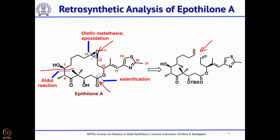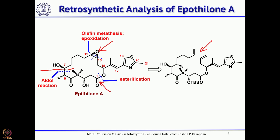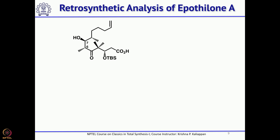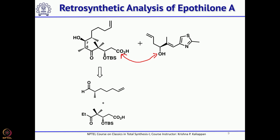The first disconnection, as mentioned, is ring-closing metathesis. This intermediate can be obtained from the corresponding carboxylic acid and alcohol through esterification — meaning these are the two precursors: a carboxylic acid coupled with an alcohol gives the ester. This carboxylic acid can in turn be obtained from the ethyl ketone and aldehyde.